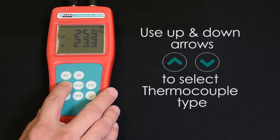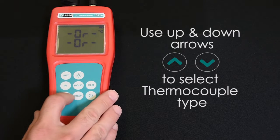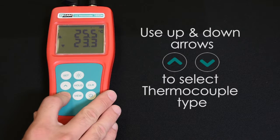To change the thermocouple type, press the up and down arrows until the correct thermocouple type is flashing on the LCD.